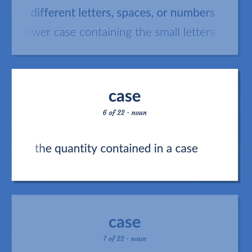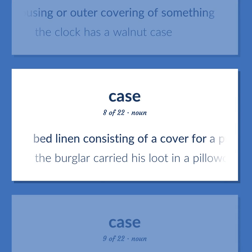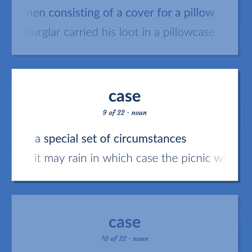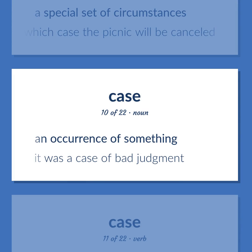Case: the quantity contained in a case. The housing or outer covering of something — 'The clock has a walnut case.' Bed linen consisting of a cover for a pillow — 'The burglar carried his lute in a pillowcase.' A special set of circumstances — 'It may rain, in which case the picnic will be cancelled.' An occurrence of something — 'It was a case of bad judgment.'